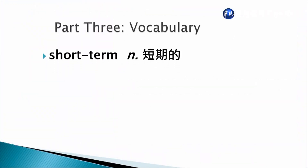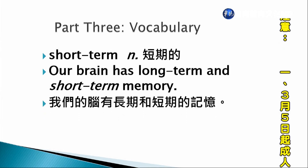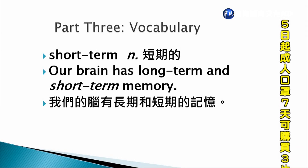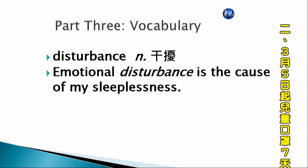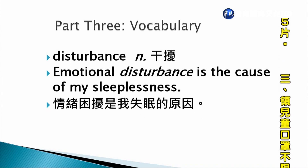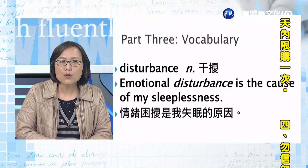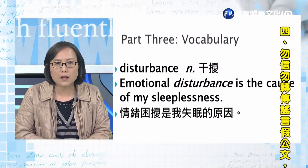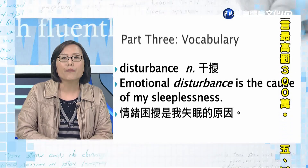Short-term，短期的，相對應的就是long-term。When our brain has long-term and short-term memory，我們的腦裡有長期以及短期的記憶區。Disturbance，干擾。Emotional disturbance is the cause of my sleeplessness. 情緒的干擾是我失眠的原因。大部分人翻來覆去睡不著就是因為有emotional disturbance，情緒上的擾動讓你不好睡。